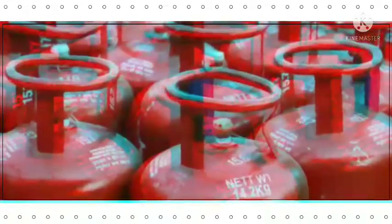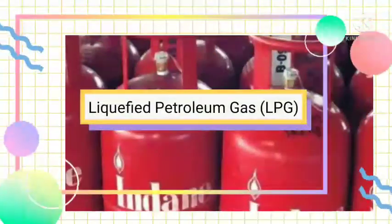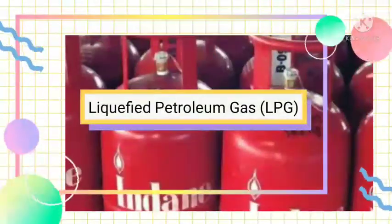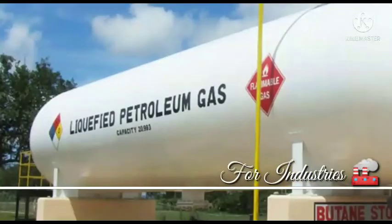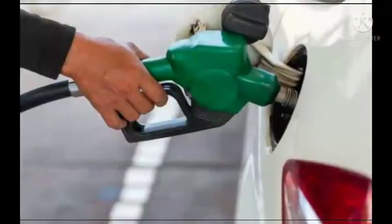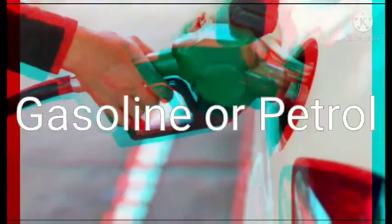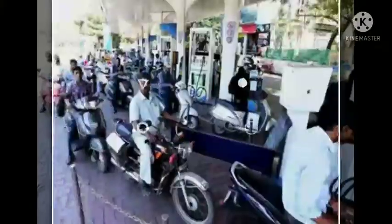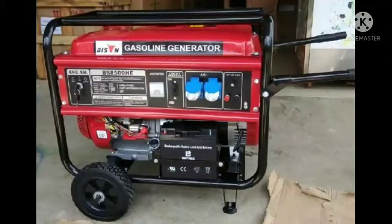Let us learn about the various constituents of petroleum and their uses. First, petroleum gas is used in the form of liquefied petroleum gas, that is LPG, as fuel in homes and industries. Second, gasoline or petrol is used as a motor and aviation fuel. It is also used in generator sets to produce electricity.